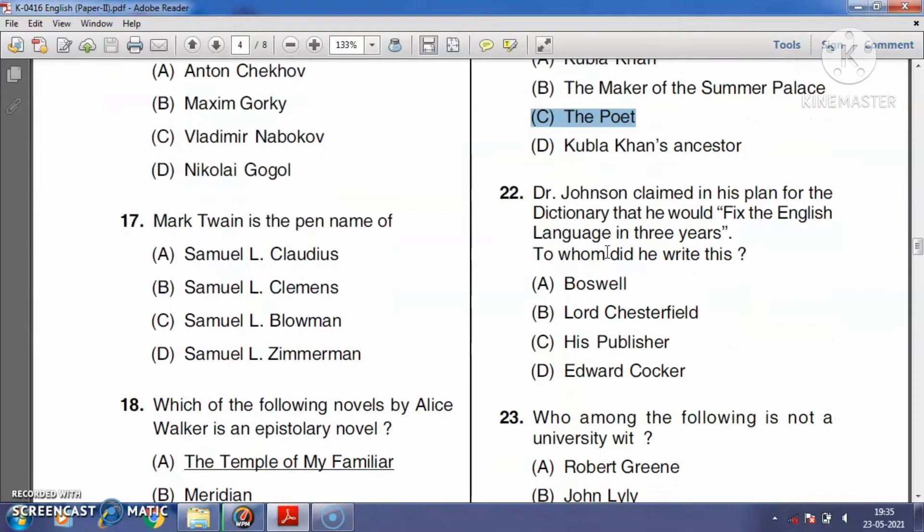Question number twenty-two: Dr. Johnson claimed in his plan for the dictionary that he would fix the English language in three years. To whom did he write it? Boswell, Lord Chesterfield, his publishers, or Edward Cooker? A Dictionary of the English Language is a book by Dr. Samuel Johnson, published in 1755. It was among the first influential dictionaries in the history of the English language. So the right answer is option B, Lord Chesterfield.